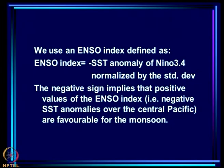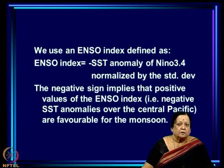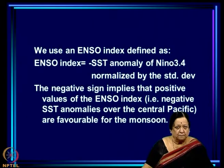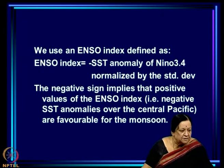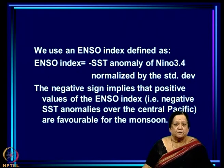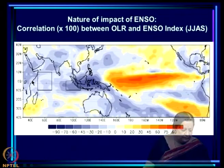We use an ENSO index defined as the negative of the SST anomaly of Niño 3.4, normalized by the standard deviation. The negative sign is used so that positive values of the ENSO index — meaning negative SST anomalies over the central Pacific — indicate La Niña, the phase of ENSO favorable for the monsoon. So positive values of the index are favorable for the monsoon.